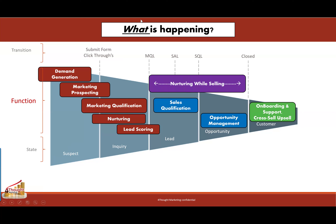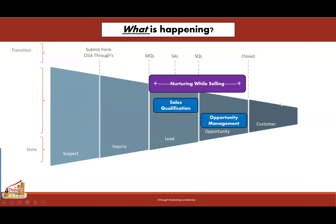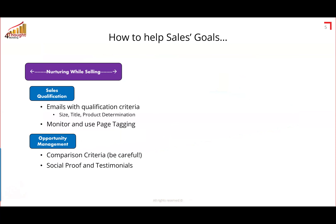What is happening during the sales process? Sales qualification happens at the early stage of the funnel, and opportunity management happens a little later on. From a qualification perspective, we want to consider the qualification criteria, send emails that may help resolve that, use page tagging, and try to understand size and title. The most common factor I see is product determination — if a sales rep is in early stages and hasn't connected with the lead yet, helping them understand the product can be huge.